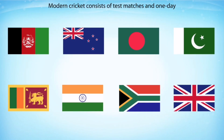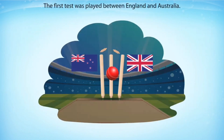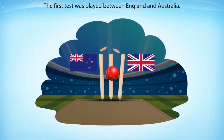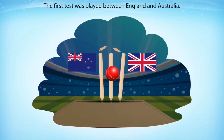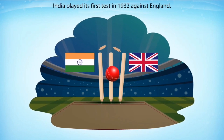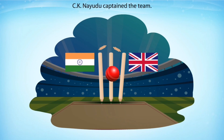Modern cricket is dominated by Test and One Day Internationals. C.K. Naidu was an outstanding batsman of his times. He played for India in its first Test matches against England in 1932. India entered the world of Test cricket in 1932 — 15 years before it became an independent nation.